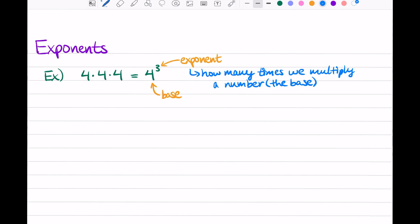So this 3 tells us we are multiplying 4 three times. It's just a shorthand. Instead of writing 4 times 4 times 4 every time, we could just write 4 with a 3 at the top right. And so how would we pronounce that? We would say 4 to the third power.